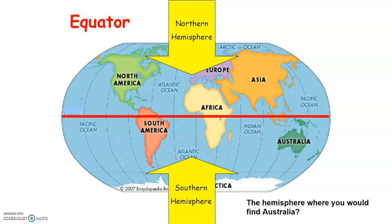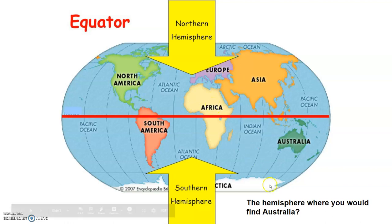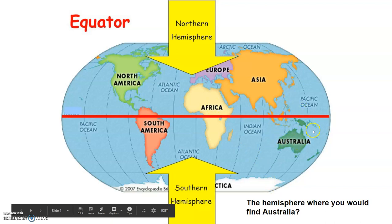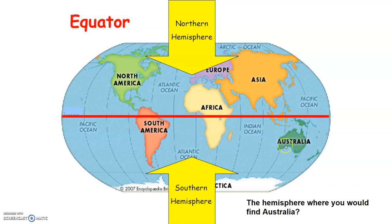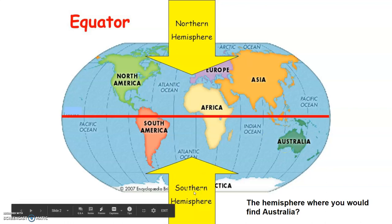The question is: the hemisphere where you would find Australia. Remember, we have up here the northern hemisphere. This is the equator — the imaginary line that breaks the earth into two halves. This half is the northern hemisphere, and below this imaginary line is the southern hemisphere. So when we look at the map we have the seven continents: North America, South America, Europe, Asia, Africa, Antarctica, and Australia. Australia is in the southern hemisphere because it's below the equator.